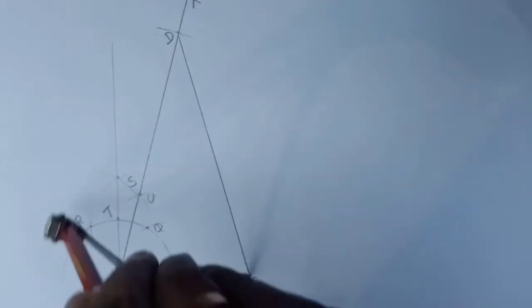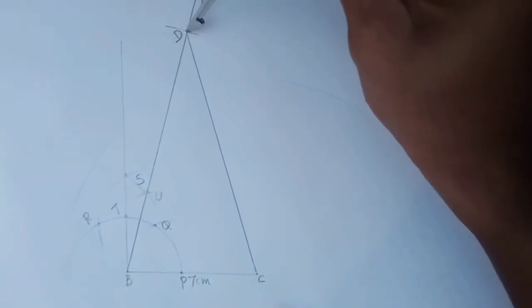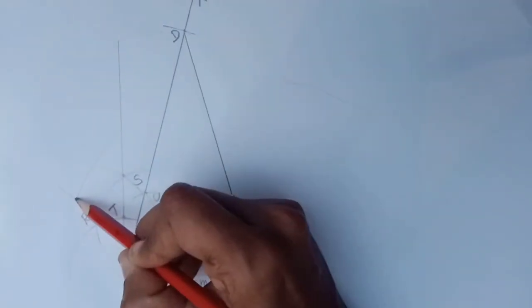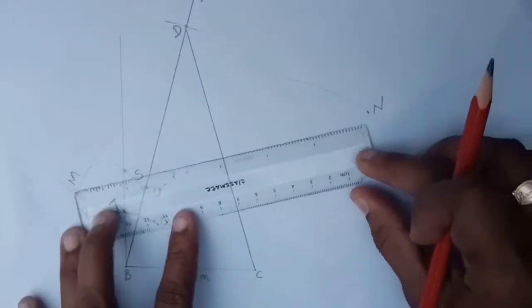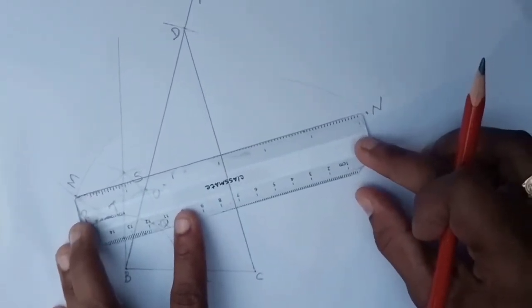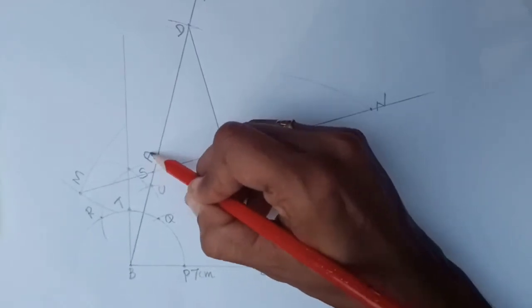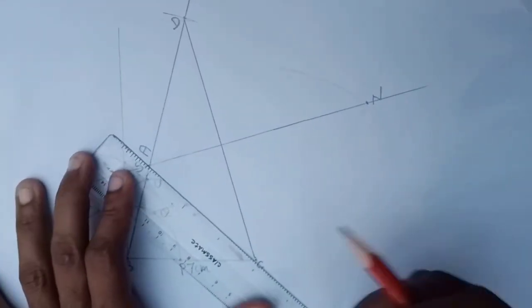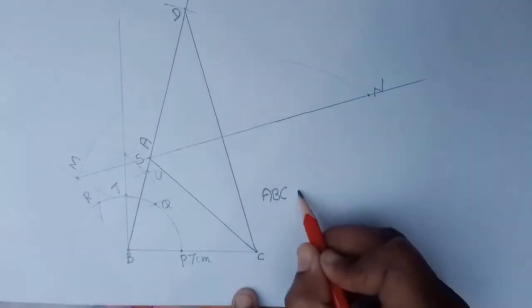Using your ruler and compass, take 13 cm and fix at B, then draw an arc on ray BX and mark point D. Join C and D. To bisect CD, take more than half the length of CD. Fix at C and draw arcs above and below; fix at D with the same radius and draw two arcs that intersect. Mark the intersections M and N, join MN. Line MN meets BD at point A — the third vertex. Join A and C. Triangle ABC is complete.